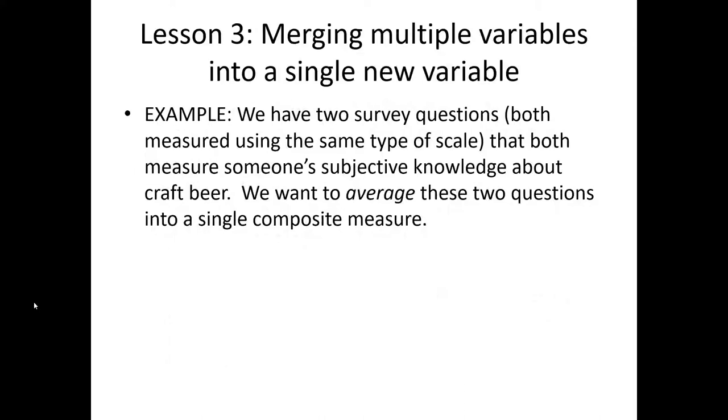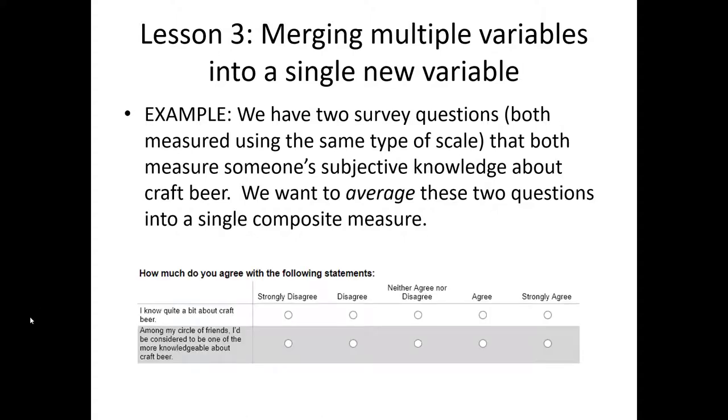In our example here, it'll be kind of simple. We have two survey questions that are measuring subjective knowledge about craft beer. Both use a Likert scale. One is 'I know quite a bit about craft beer.' The other one is 'Among my circle of friends I'd be considered to be one of the more knowledgeable about craft beer.'